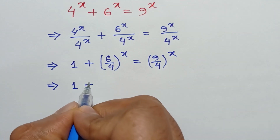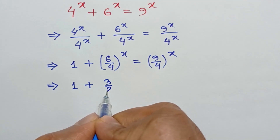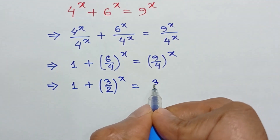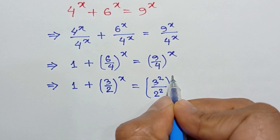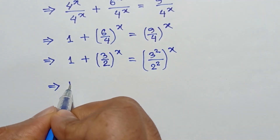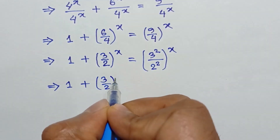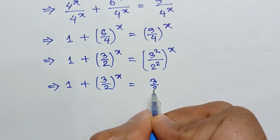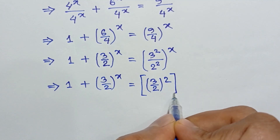Simplifying, 6 over 4 reduces to 3 over 2, and 9 over 4 can be written as 3 over 2 squared. So we get 1 plus (3 over 2) to the power x equals (3 over 2) squared, all to the power x.